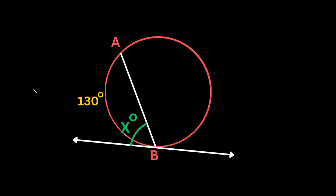We're going to start with a more basic example. Here you can see we have a circle, we have a tangent line down here, and we have a chord. So this is a case where a tangent and a chord intersect, and as you can see it creates an angle — this missing angle that we're looking for right here.